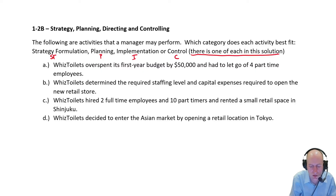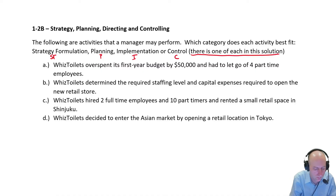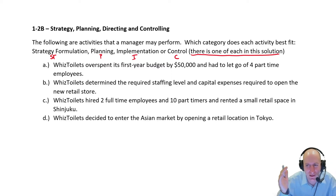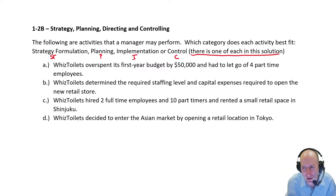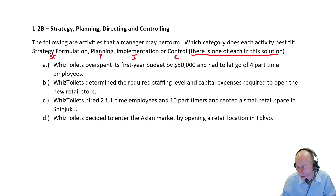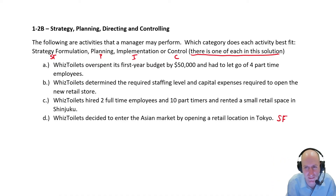C: Wiz Toilets hired two full-time employees and 10 part-timers and rented a small retail space in Shinjuku. And D: Wiz Toilets decided to enter the Asian market by opening a retail location in Tokyo. Strategy formulation is going to come first — this is the broad strategy, we're going to Japan, we're entering Tokyo. And Shinjuku is a neighborhood in Tokyo, so that comes next as implementation.